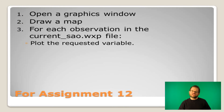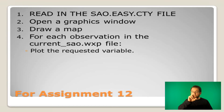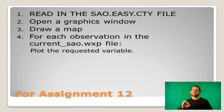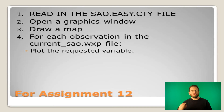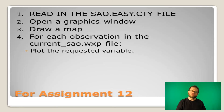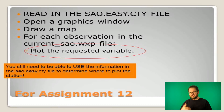Looking back at the steps for assignment 12: originally step one was open the window, step two draw the map, step three plot every observation. Let's shift that — step one is now read the SAO.EasyCity file so you have all that information. Then open the graphics window, draw the map, and then for every station in current_SAOWXP, plot the data.